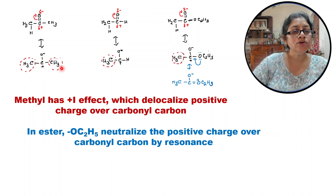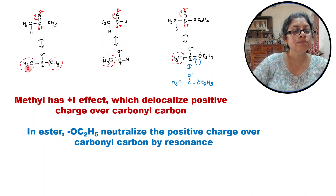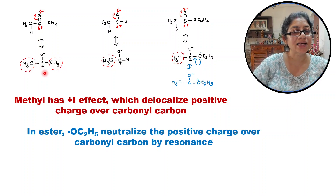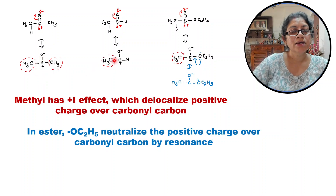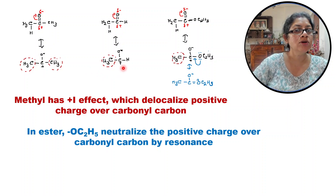Now look at the acetone structure. This carbon is positively charged and there are two methyl groups. Methyl has a +I effect. Due to this +I effect this positive charge is delocalized. With one methyl, this delocalization will be less.